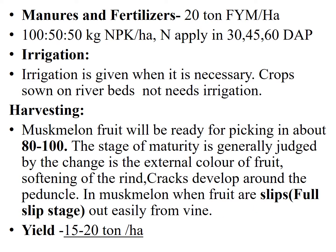Regarding manures and fertilizers, 20 tons of FYM should be applied at the time of last harrowing. In chemical fertilizers, 150-50 kg NPK should be applied per hectare. At the time of sowing, half the dose of nitrogen, full dose of phosphorus and potassium should be applied. The remaining half dose of nitrogen is applied 30, 45, and 60 days after planting.